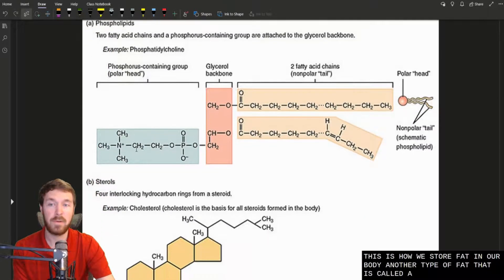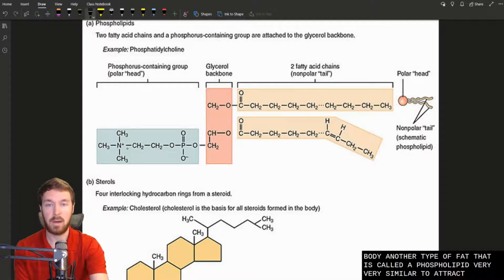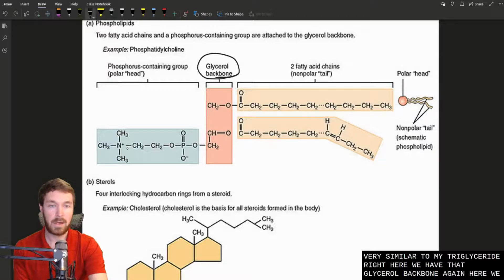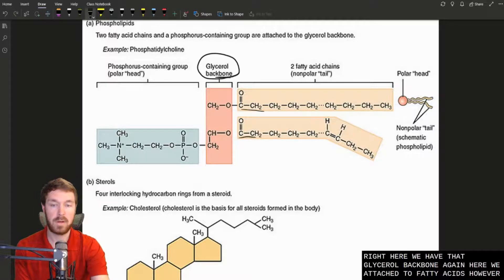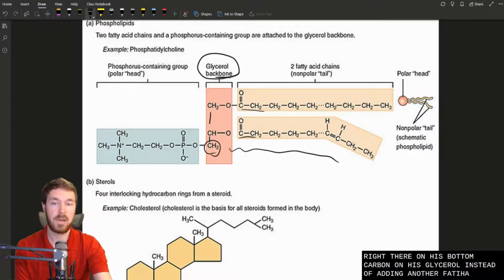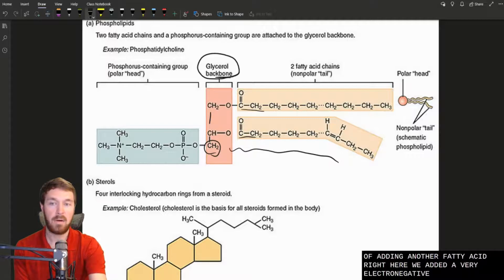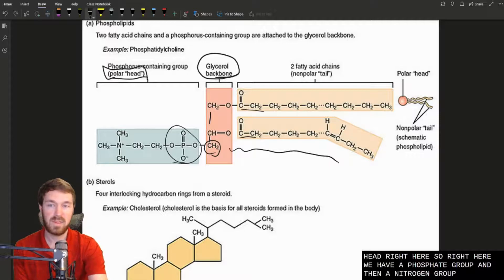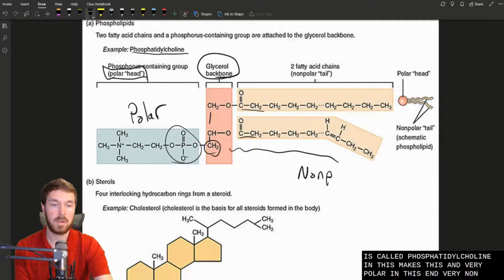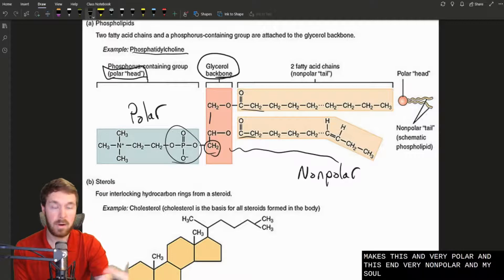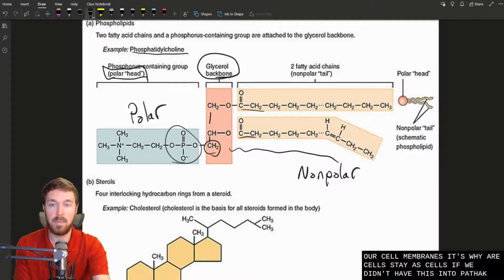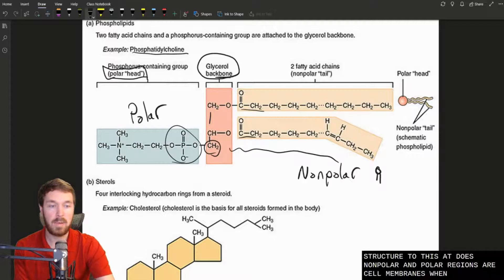Another type of fat then is called a phospholipid. Very similar to a triglyceride. Right here we have that glycerol backbone again. Here we attach two fatty acids. However, on this bottom carbon, instead of adding another fatty acid right here, we added a very electronegative head or a polar head right here. So right here we have a phosphate group and then a nitrogen group over here. So this is called phosphatidylcholine. And this makes this end very polar and this end very non-polar.